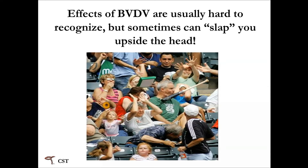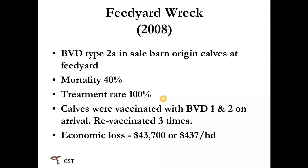The effects of BVD are usually hard to recognize — most of the time it's subclinical and robbing you in the background, but every once in a while it reaches out and slaps you. From a paper we published in 2008 about BVD in the feed yard: cattle arrived with a type 2A PI — a very aggressive strain with very naive cattle — resulting in 40 percent mortality and treatment of 100 percent of the calves. These animals were vaccinated with a BVD type 1 and type 2 vaccine on arrival and revaccinated three times. The cost of this virus in this pen worked out to $437 per head.